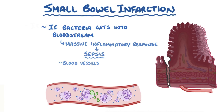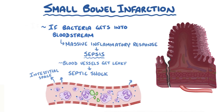In sepsis, blood vessels throughout the body can get leaky, and if enough fluid moves from the blood vessels into the interstitial space, it can lead to septic shock, which is where organs throughout the body get insufficient blood, and this can lead to organ failure and death.